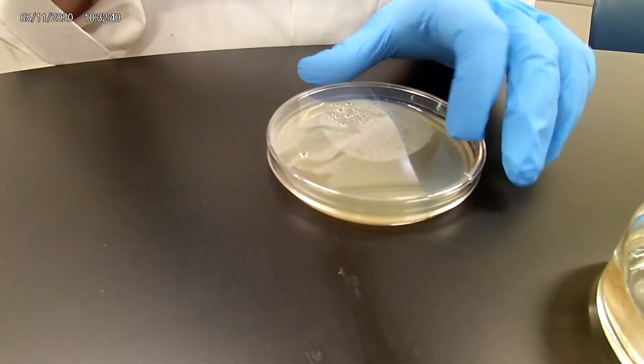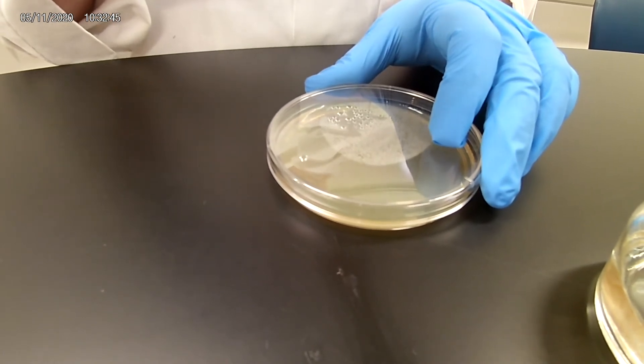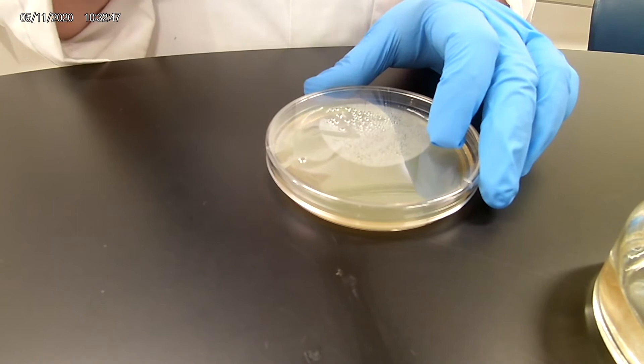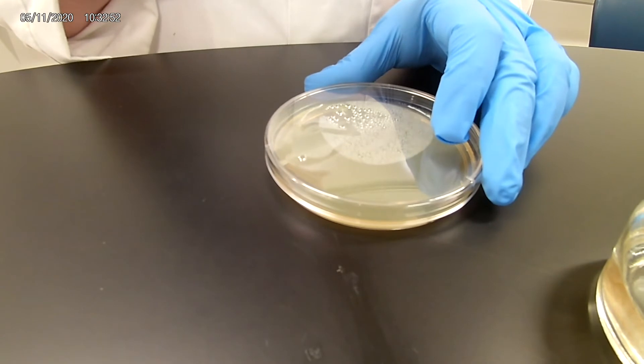And then last but not least, go into the fourth quadrant. So some people prefer doing this way where they have the four quadrants. And the idea is that by the time you're in the fourth quadrant, you should have individual separate colonies.